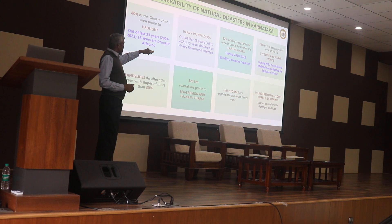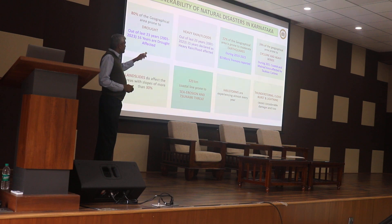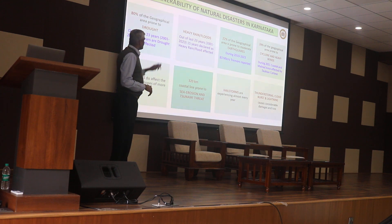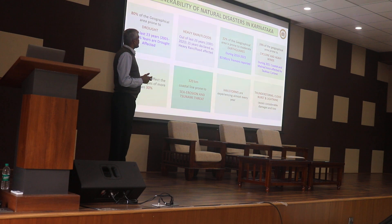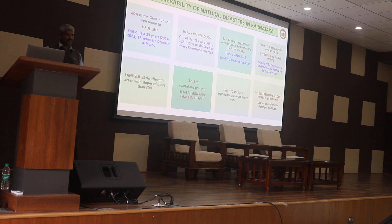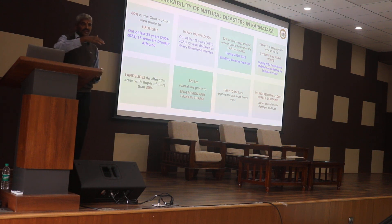Based on 15 years of rainfall data and other parameters, many years have been declared as drought-affected areas. Around 22% of the geographic area falls under the moderate earthquake zone, where the earthquake corridor runs through the northern part of the state.